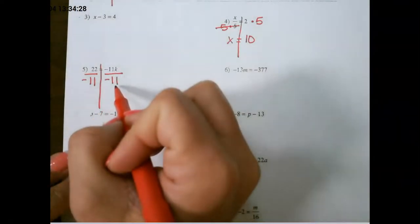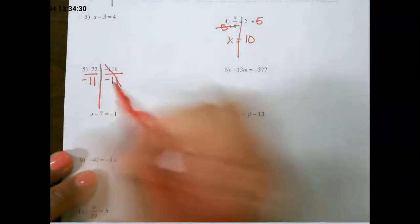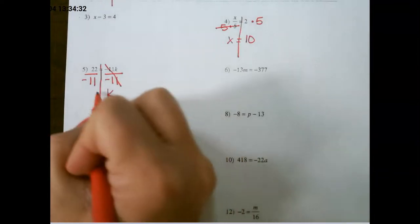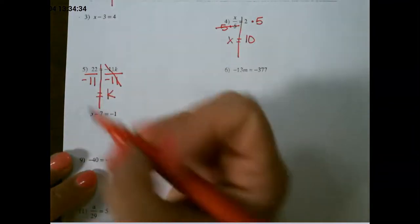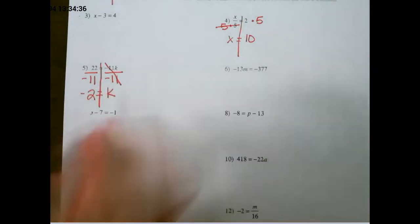If I multiply by negative 11 and divide by negative 11, that cancels out and leaves me with k on the right, and 22 divided by negative 11 would be negative 2.